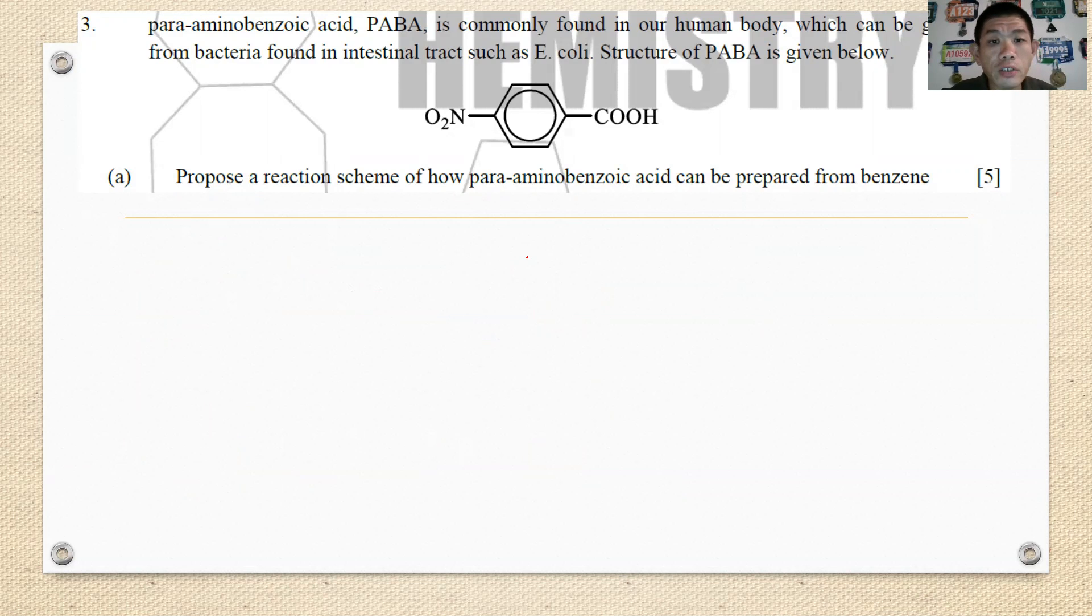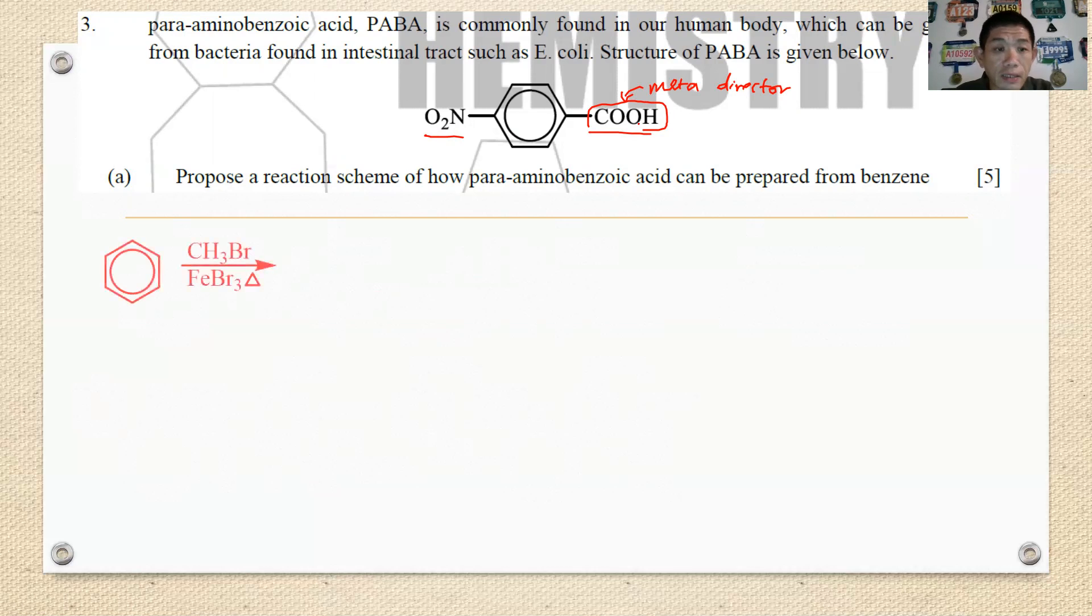Propose a reaction scheme to show how para-amino benzoic acid can be prepared from benzene. If you look carefully at the structure, this is NO2 and this is COOH. If you're already aware that both of them are what is so called as a meta director. So if you want a meta director to be located at a para position, one of them must definitely comes from ortho para group before becoming a meta group. Undoubtfully the one that first becomes ortho para group before becoming meta group is the COOH. So you need to form CH3 first before becoming COOH.